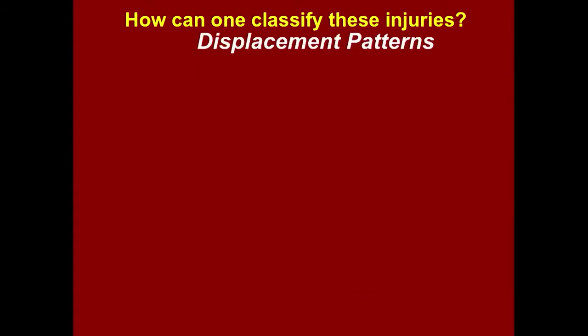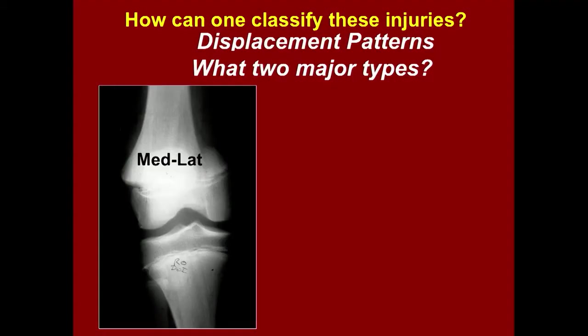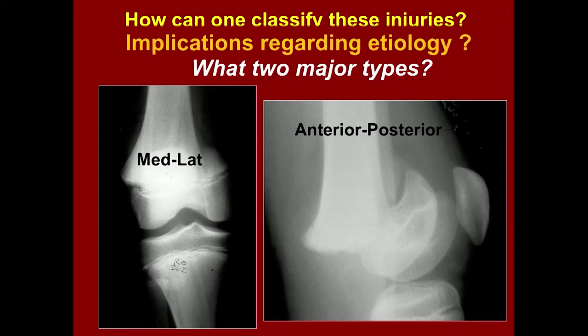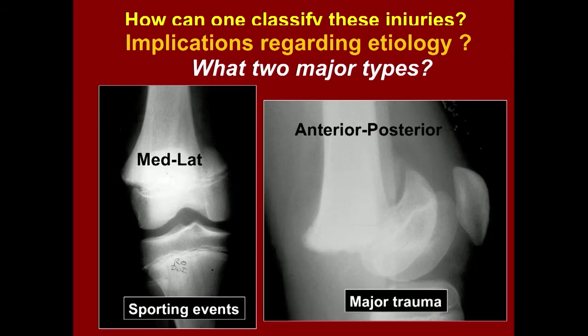How do you classify them based on displacement patterns? There are two major types: medial-lateral displacement in the coronal plane, or anterior-posterior displacement in the sagittal plane — sometimes a combination of both. The coronal pattern is usually from sporting events, while the anterior-posterior pattern is usually from severe trauma.